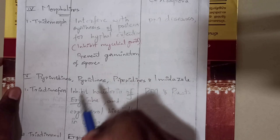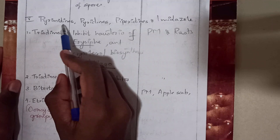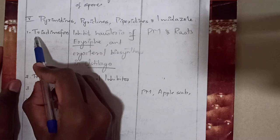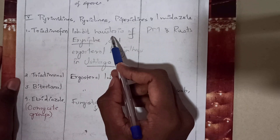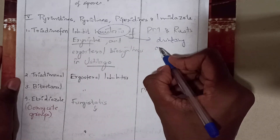The fifth group is pyrimidines, pyridines, and imidazole. The first compound is triadimefon, used against powdery mildew and rust of many species. It inhibits the haustoria, which is the feeding organ of fungi, especially Erysiphaceae causing powdery mildew, and inhibits ergosterol biosynthesis in Ustilago.